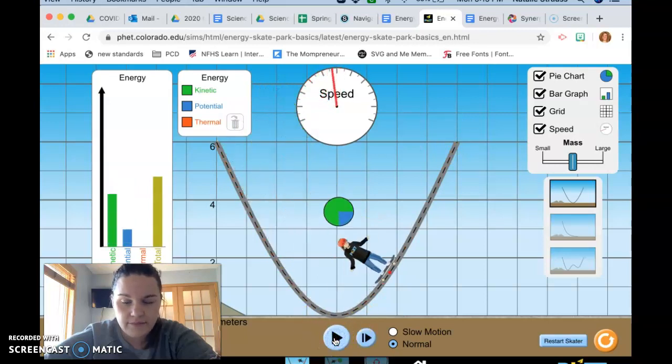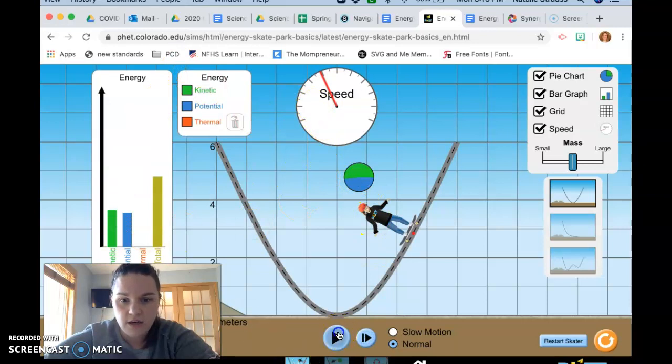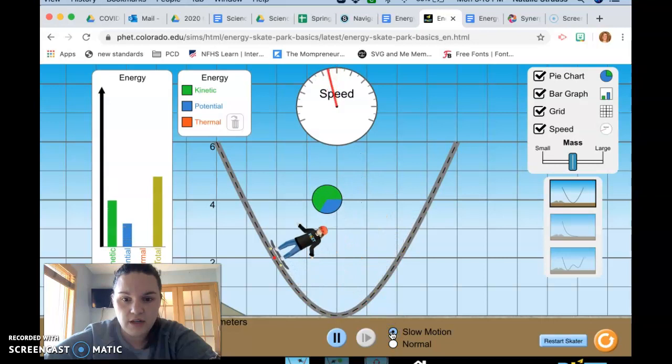Now you can pause it. You can go slowly at little points of time by putting this and you can see all of my different things are changing here. You can play it again and then I can switch it to slow motion instead of normal motion.